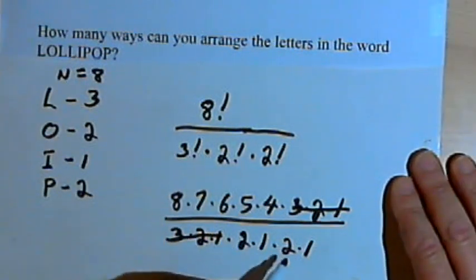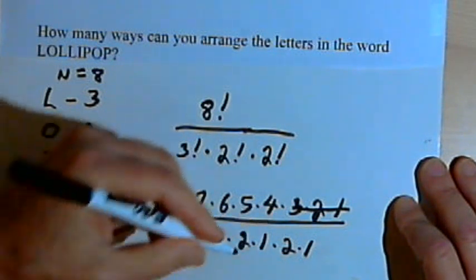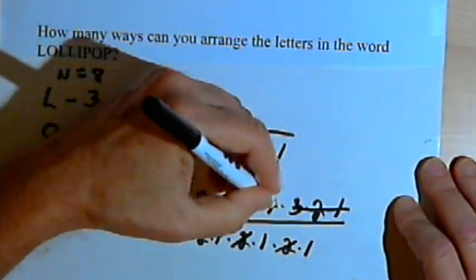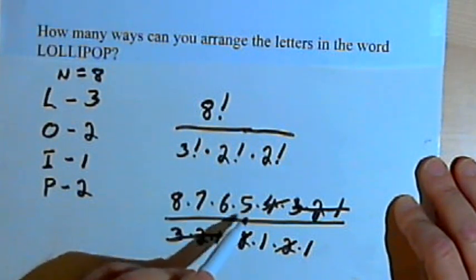I can cancel out the 3, 2, and 1 from the numerator and the denominator. I've got two more 2's left in the denominator. Well, 2 times 2 is 4. And I've got a 4 in the numerator. So I'll cancel out those 2's. I'll cancel out the 4.